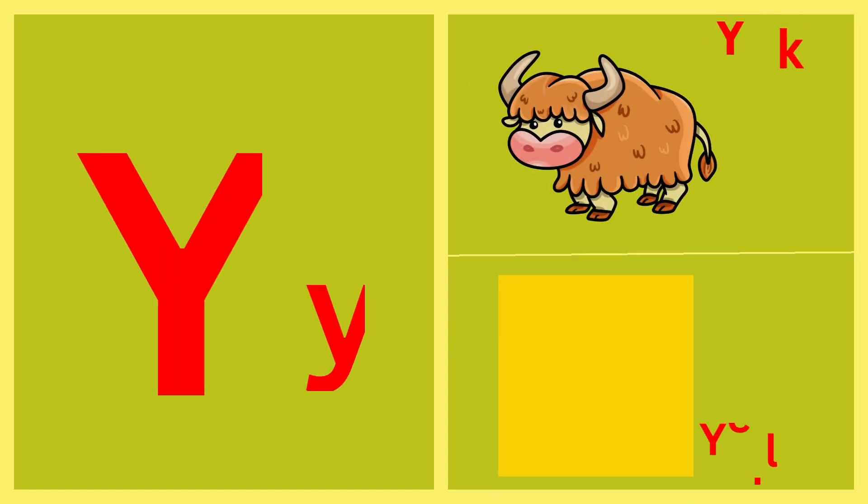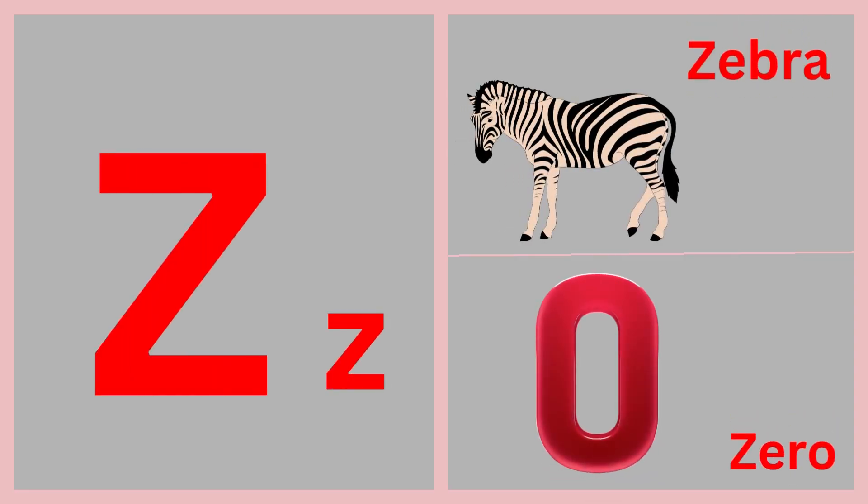Y for yak, Y for yellow, Z for zebra, Z for zero.